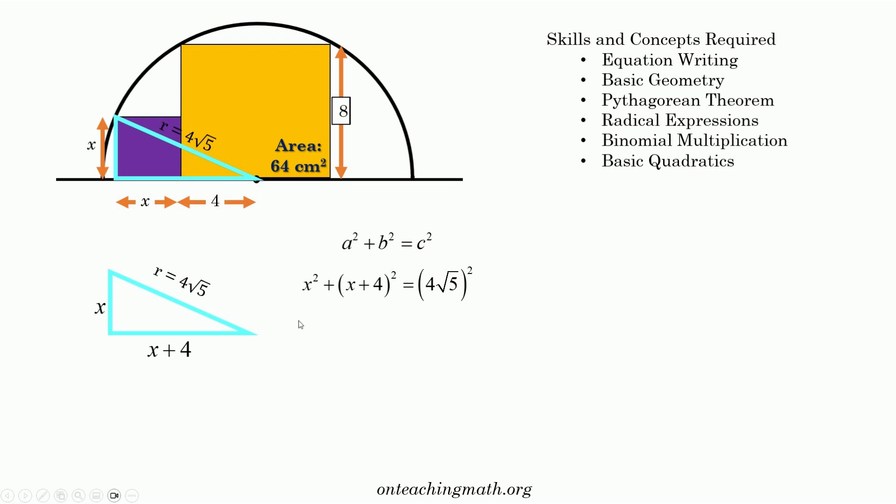A squared plus B squared is c squared. So x squared plus x plus 4 squared equals 4 times the square root of 5, that whole entire number squared. Let's go ahead and unpack this a little bit. x plus 4 squared is of course not x squared plus 16. Be very careful. You can't distribute an exponent over addition. So this means the base times itself. So x plus 4 times x plus 4. That's going to be x squared plus 8x plus 16.